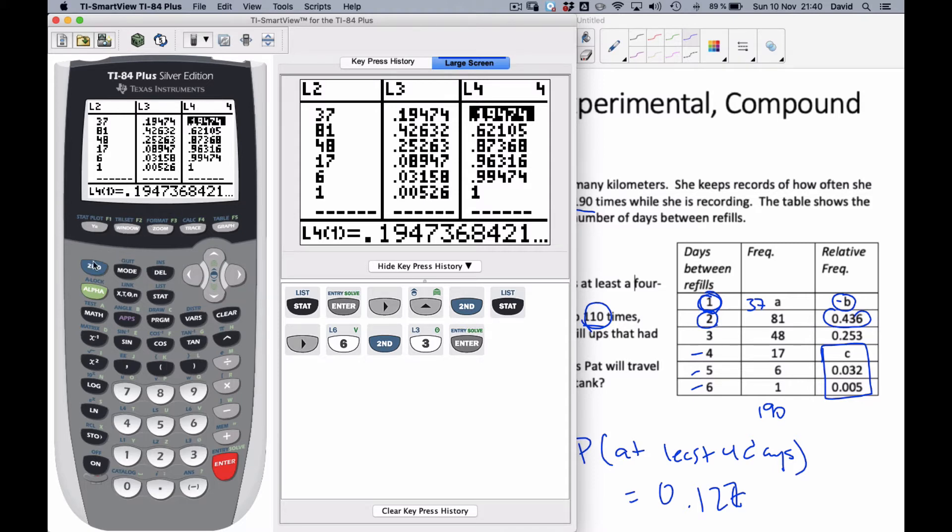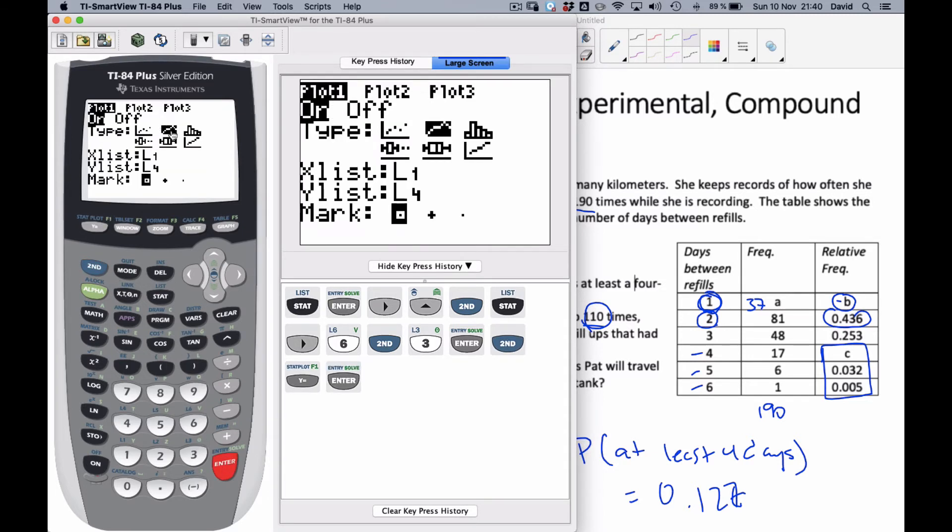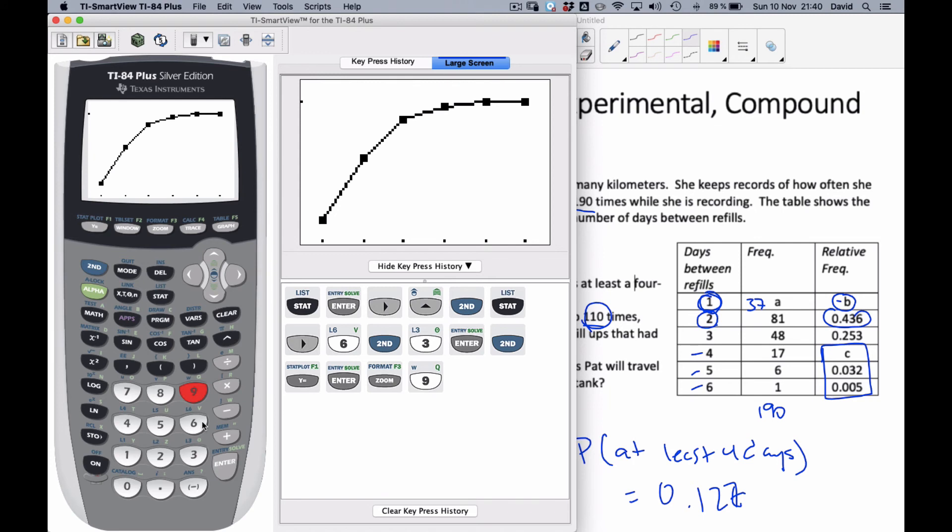If I want to see what the graph looks like, well, if I go to my stat plot, I'm going to turn on, go to stat plot 1, and I'm going to go to this setting, L1 and L4. And if I zoom this to 9 statistics, this is my cumulative frequency plot here, the ones that we see sometimes on tests. But our calculator will do it as well, just an extra little calculator tool.